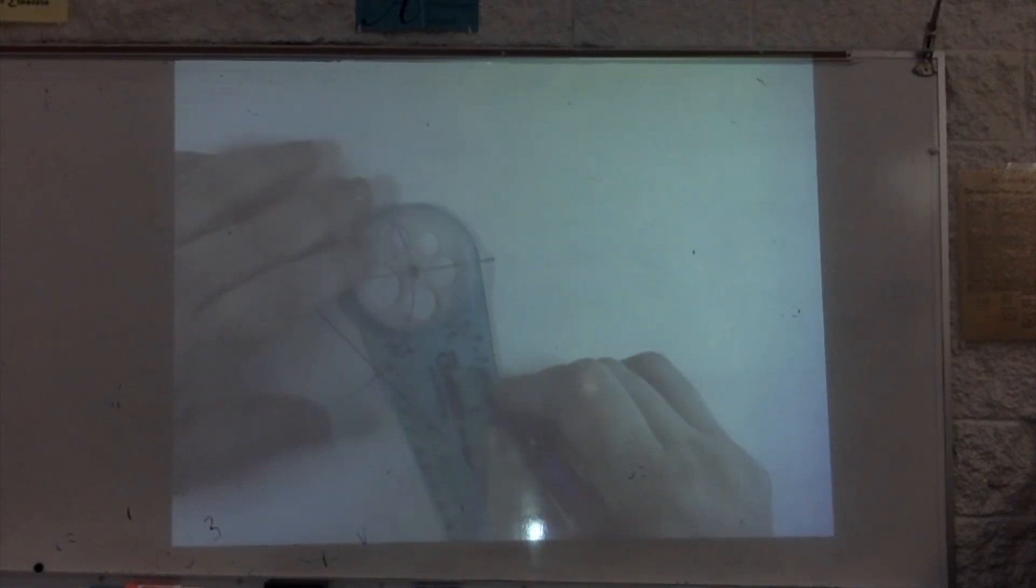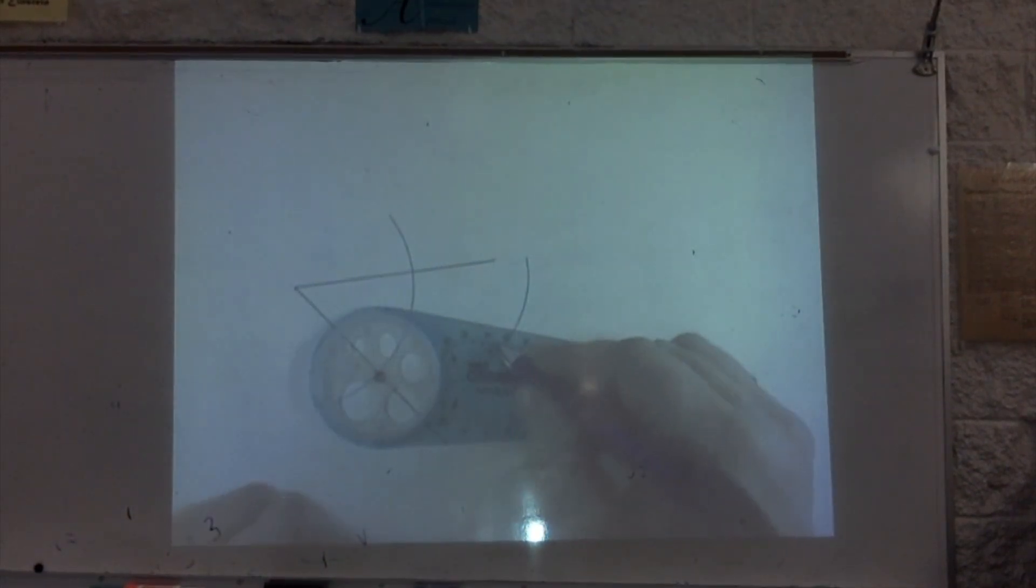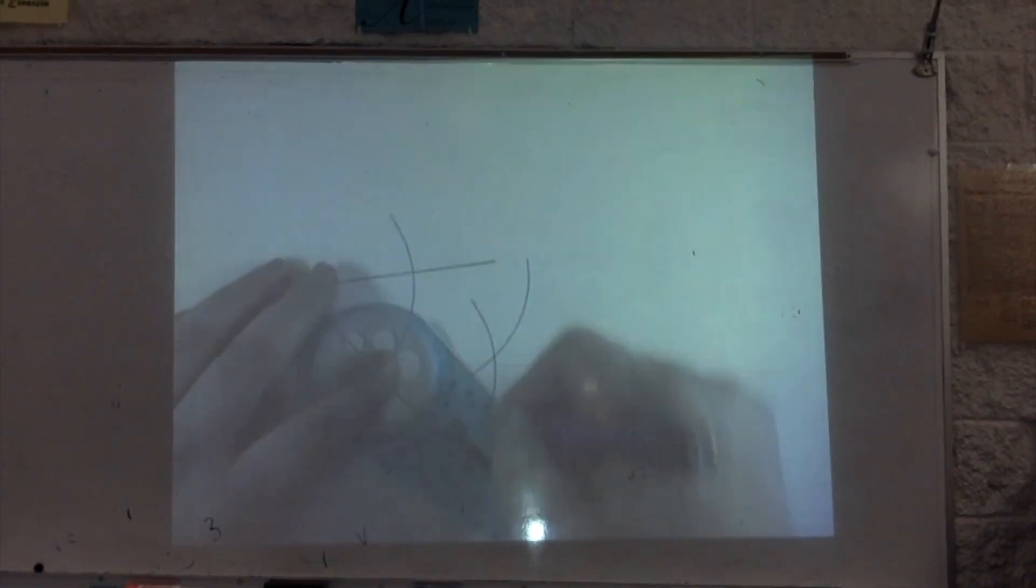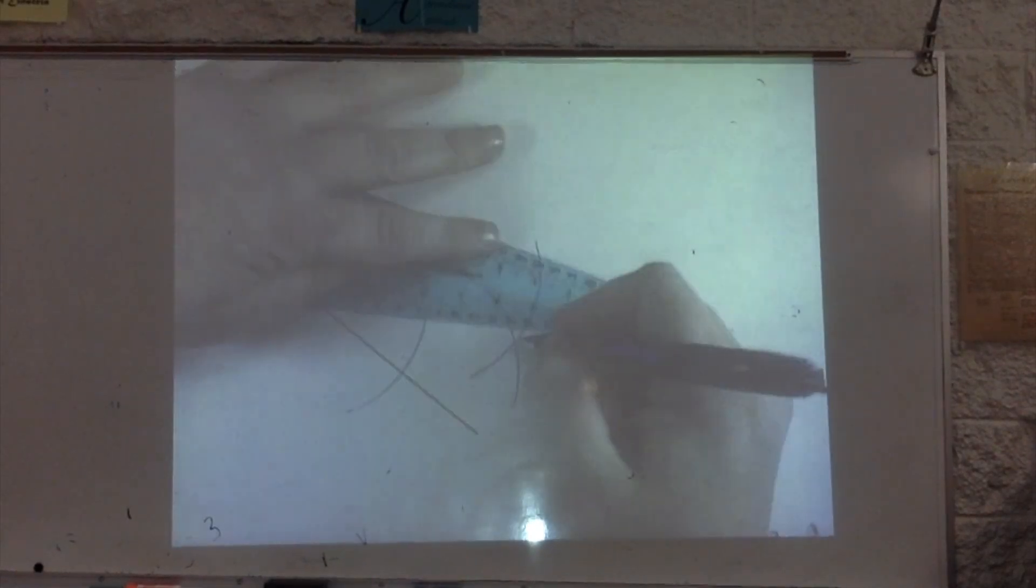Arcs two and three have to be in the same hole as each other. Some people like to make it the same hole arc one was in. You go to where the first arc intersects one side of the angle, and you put the middle part of the compass there.